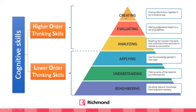It is important that we focus our efforts on higher-order thinking skills — that is where deeper learning happens. Remembering, understanding, and applying are the beginning of the process, but students shouldn't just stop there. They have to understand things, apply them, analyze them, evaluate them, and finally create. These categories come from Bloom's Taxonomy.